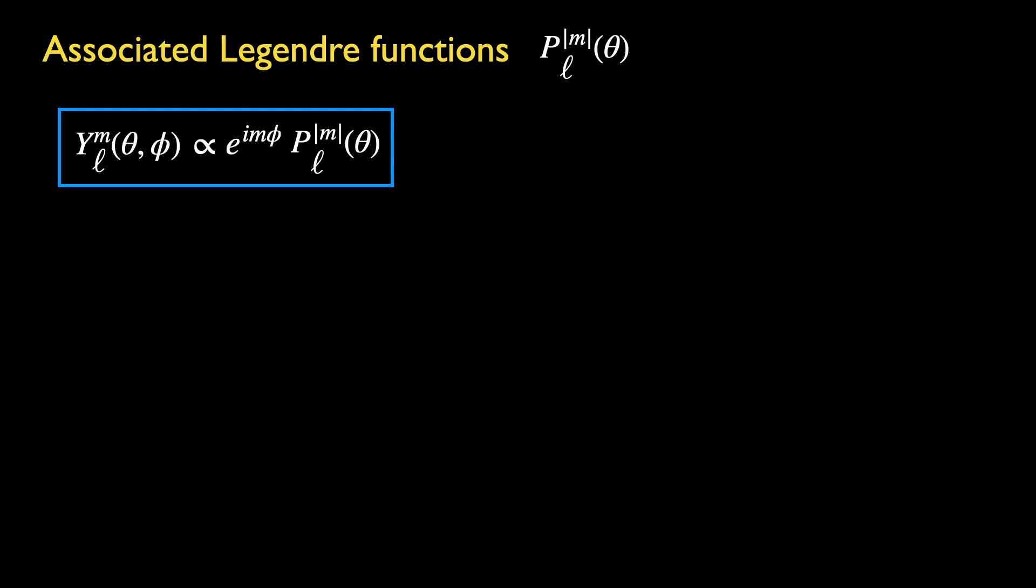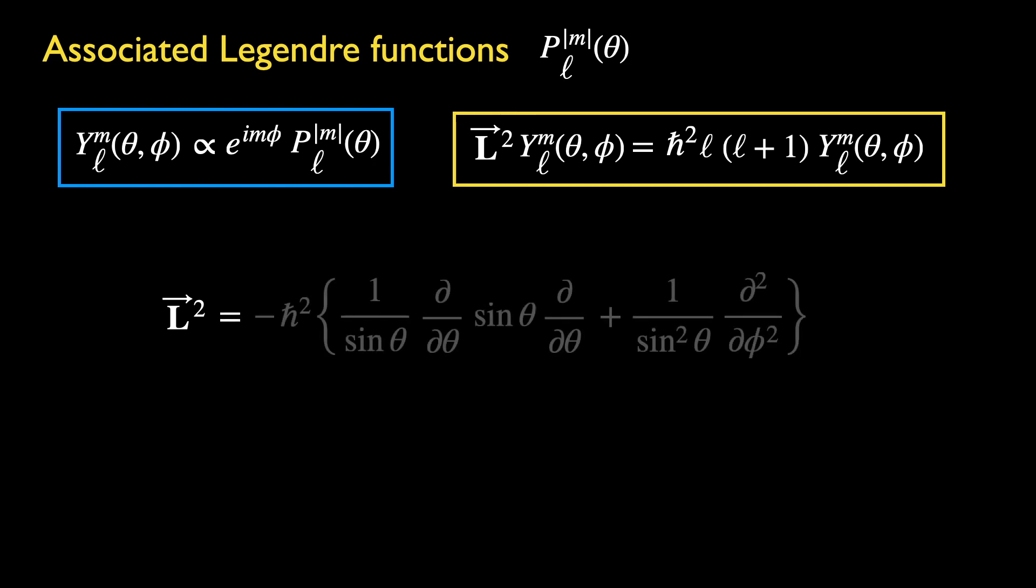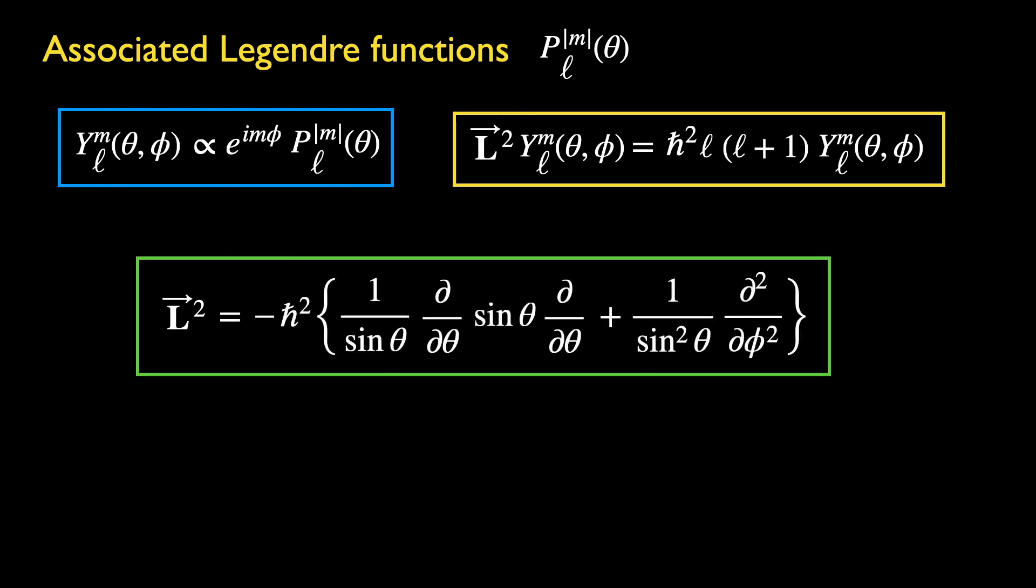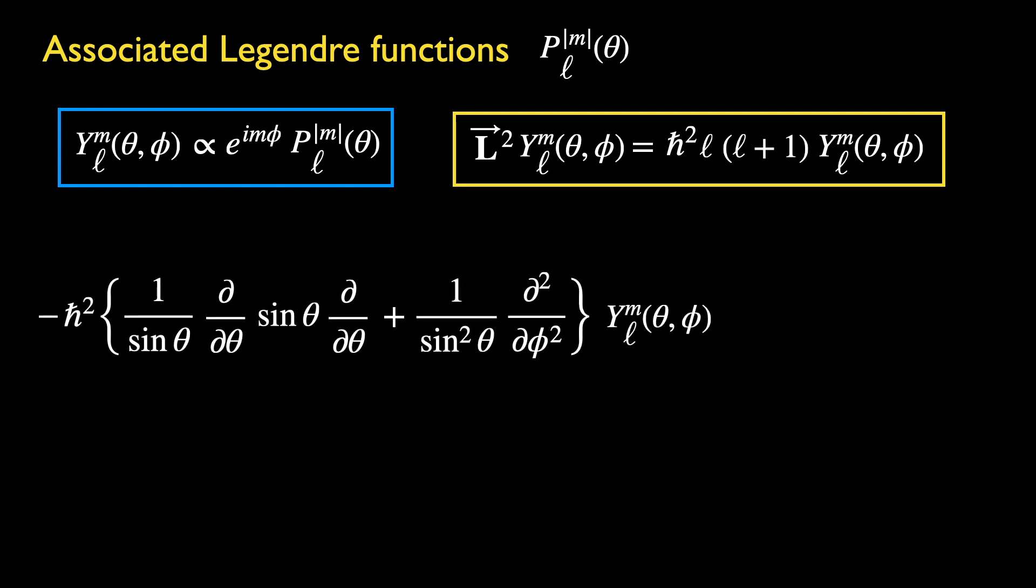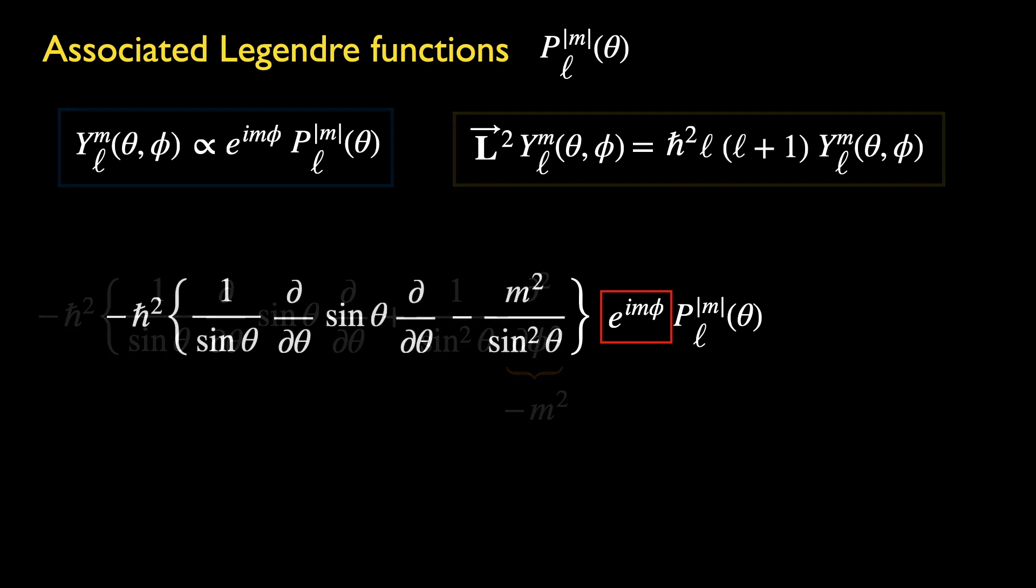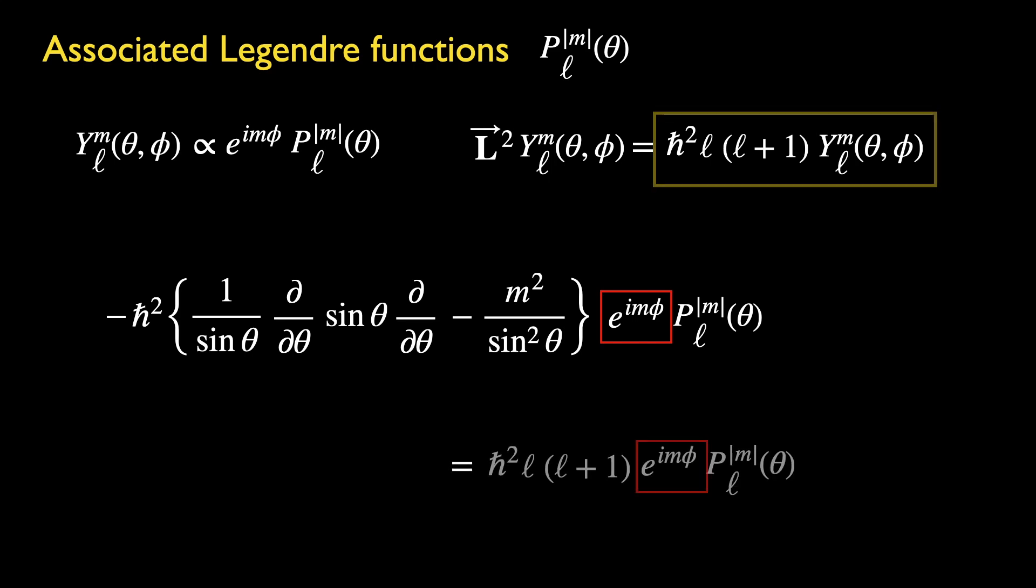We could generate the differential equation for these functions using the eigenfunction equation and the spherical coordinate representation of L-square. Let's apply this operator to Y_Lm. The second derivative with respect to the angle phi acts on the L3 eigenfunction to give minus m-square. After this step, the L3 eigenfunction can be factored out, since there is no longer any term dependent on phi within the curly braces.